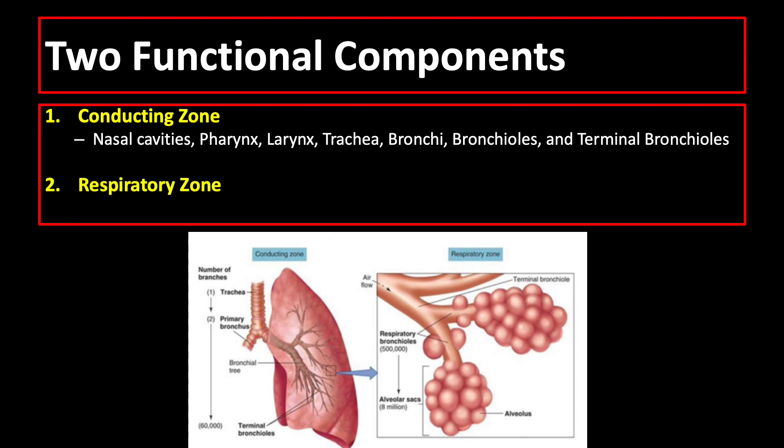The other component is the respiratory zone, where the actual gas exchange happens. It includes respiratory bronchioles, alveolar ducts, and alveolar sacs and alveoli. Let us discuss these specific parts one by one.